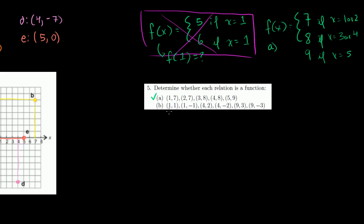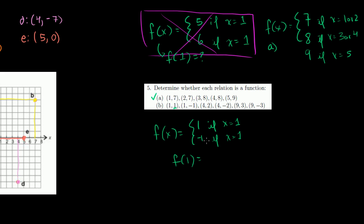Now part b: if x is 1, y is 1 — but then they also say if x is 1, y is negative 1. That makes no sense. They're trying to define a function where it equals 1 when x equals 1, but also equals negative 1 when x equals 1. If I take f(1), I don't know whether it's 1 or negative 1. So part b is not a function — that relation is not a function.